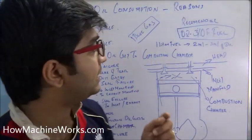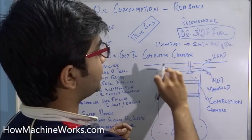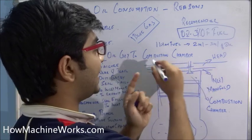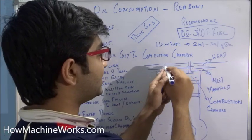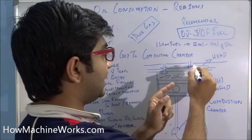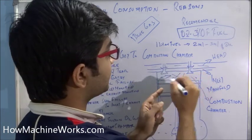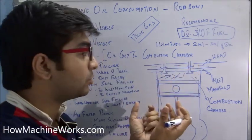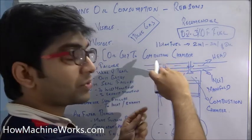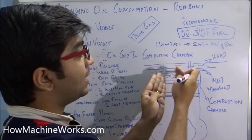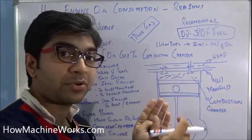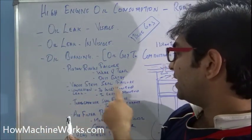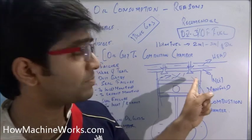The second cause is valve stem seal failure. You can see here — above the inlet manifold we have the valve guides, and on the head side we have lubricating oil. If the valve stem seals fail, oil can get into the inlet manifold and enter the combustion chamber, where it comes into contact with hot air and burns off.